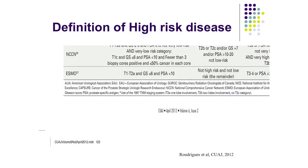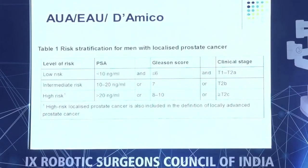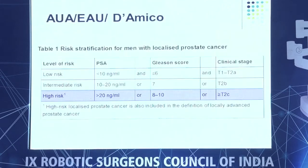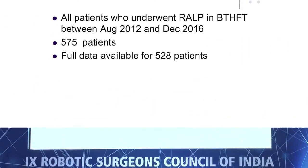We need an acceptable definition for high-risk prostate cancer. There are eight definitions, but I'll use the common ones. The three factors are PSA, Gleason score, and clinical stage. The common definition of high-risk is PSA more than 20, Gleason 8 to 10, and clinical stage T2C or greater.